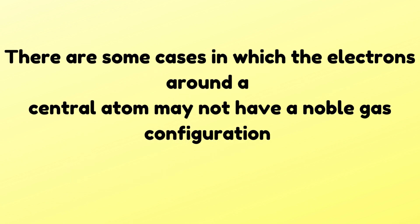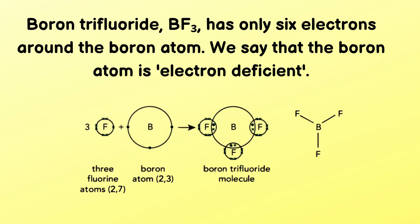There are some cases in which the electrons around a central atom may not have a noble gas configuration. An example is BF₃, which has only six electrons around the boron atom. We say that the boron atom is electron deficient — three fluorine atoms contribute only six electrons total around boron, not eight.